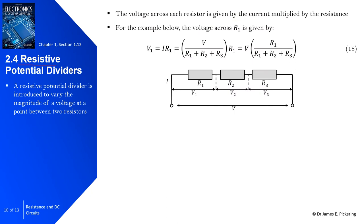Resistive potential dividers are introduced to effectively vary the magnitude of a voltage at a point between two resistors. For example, if a supply voltage is 10 volts, we might want the voltage drop between two resistors to be lower — say 5 volts — to supply a given load such as a DC motor with a particular voltage rating.